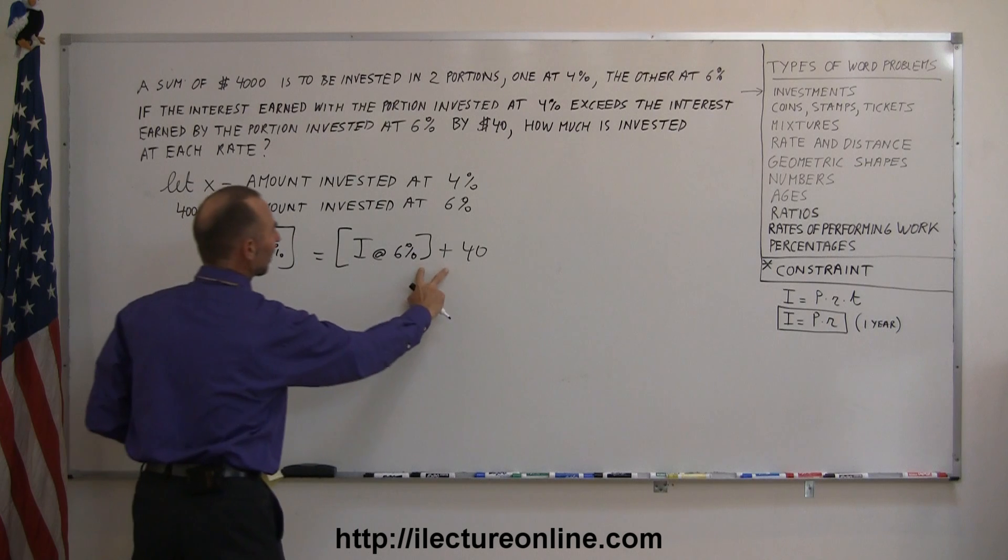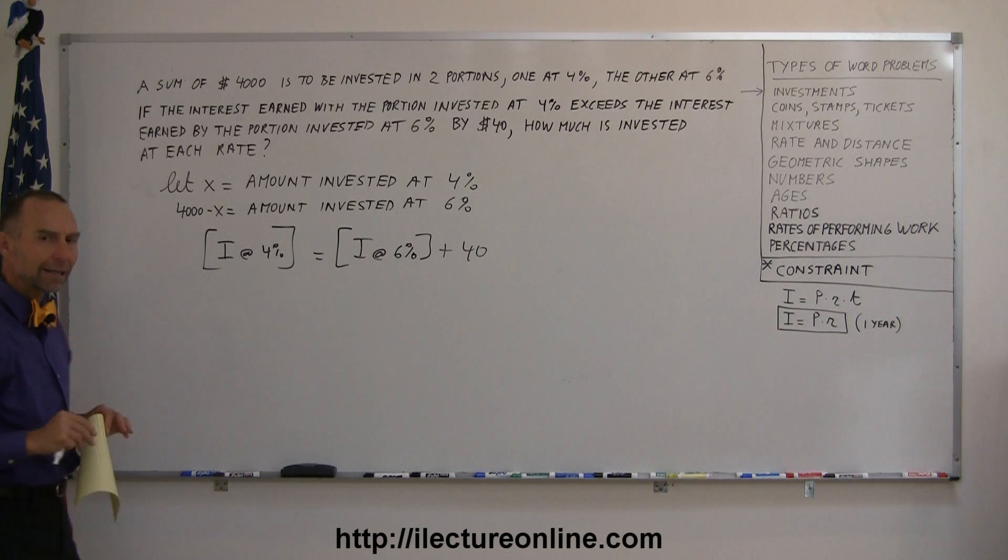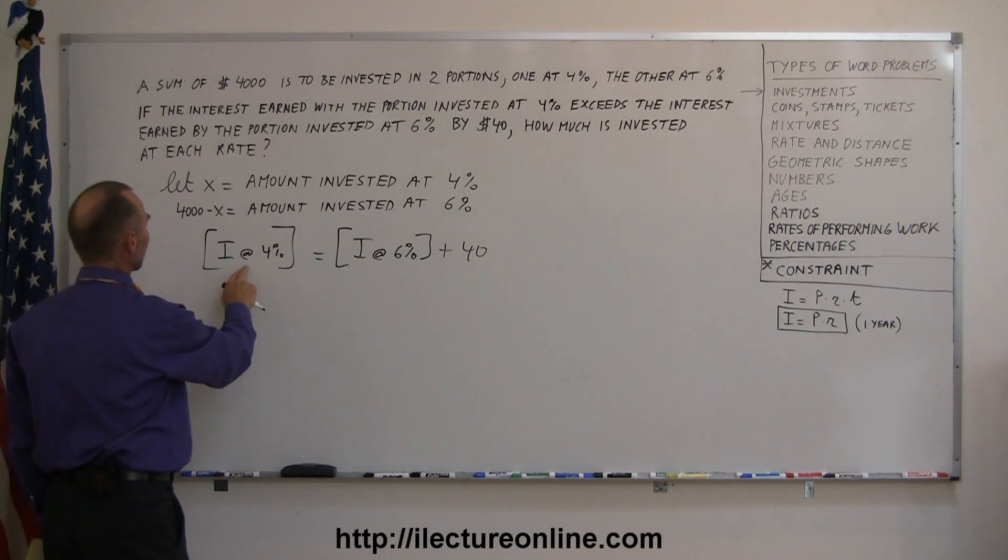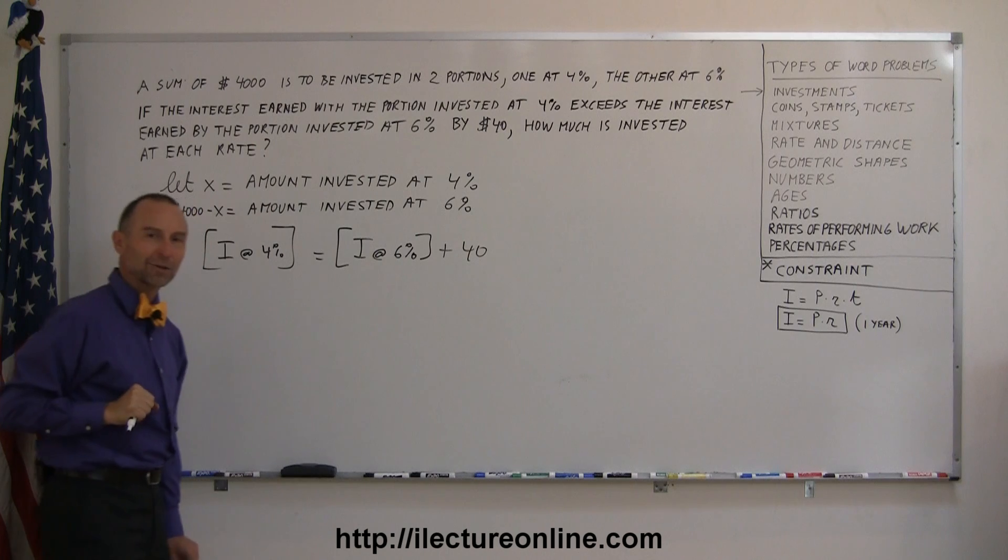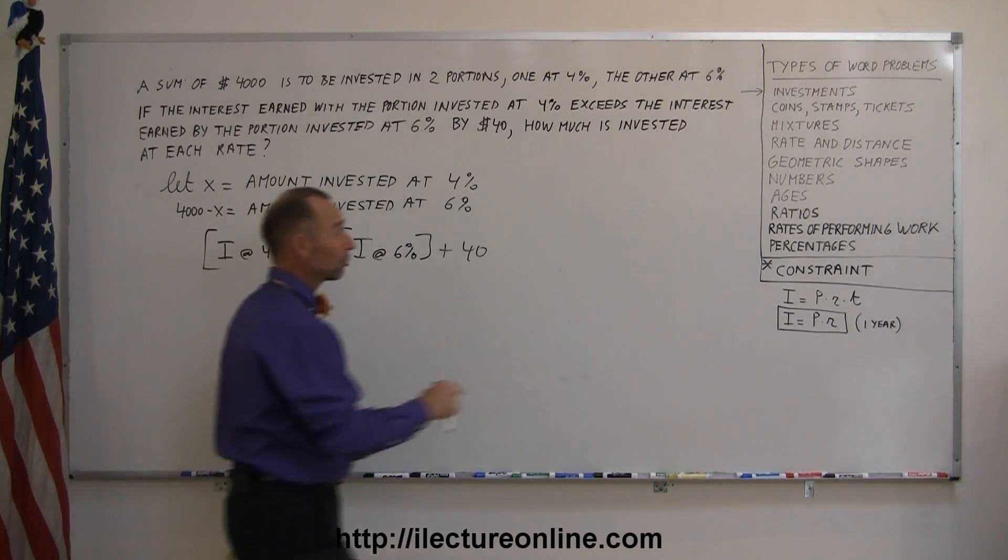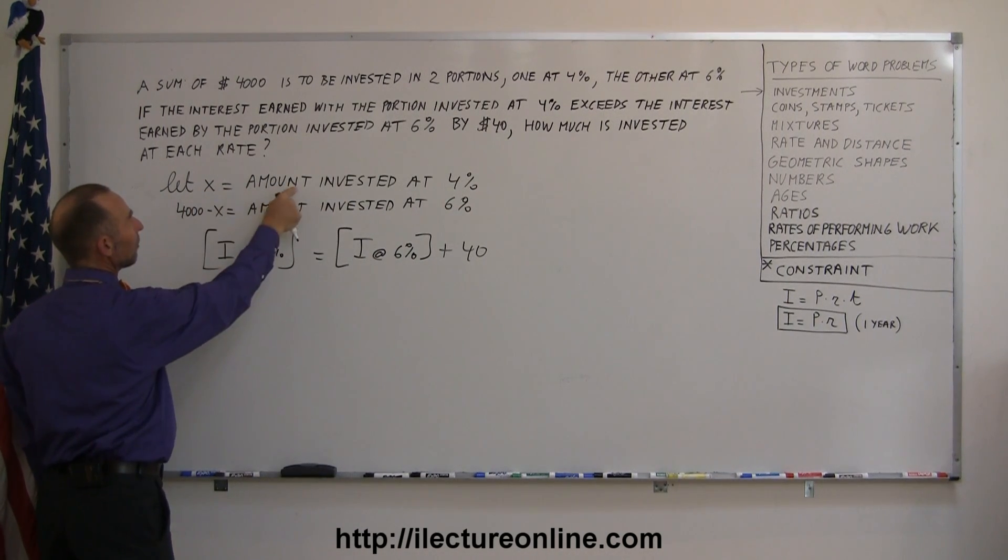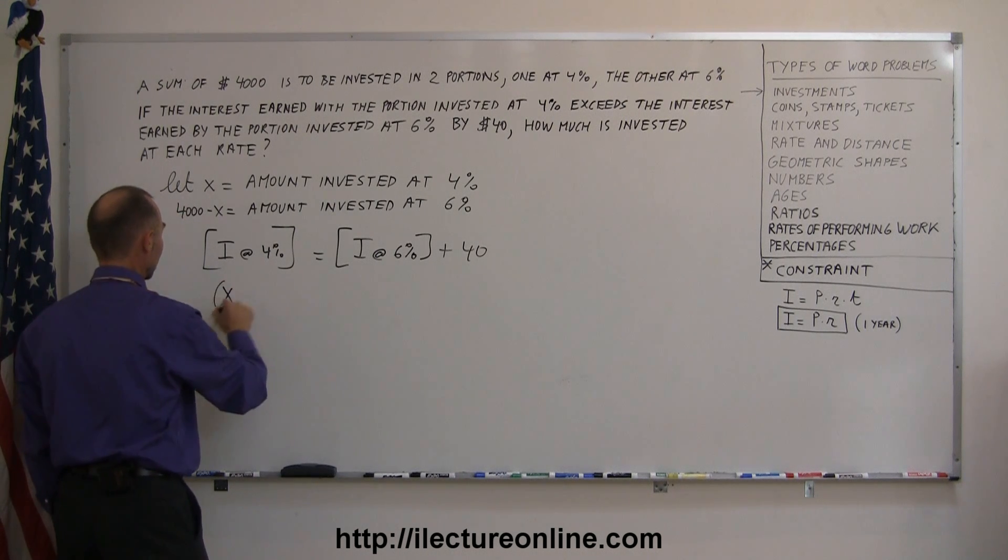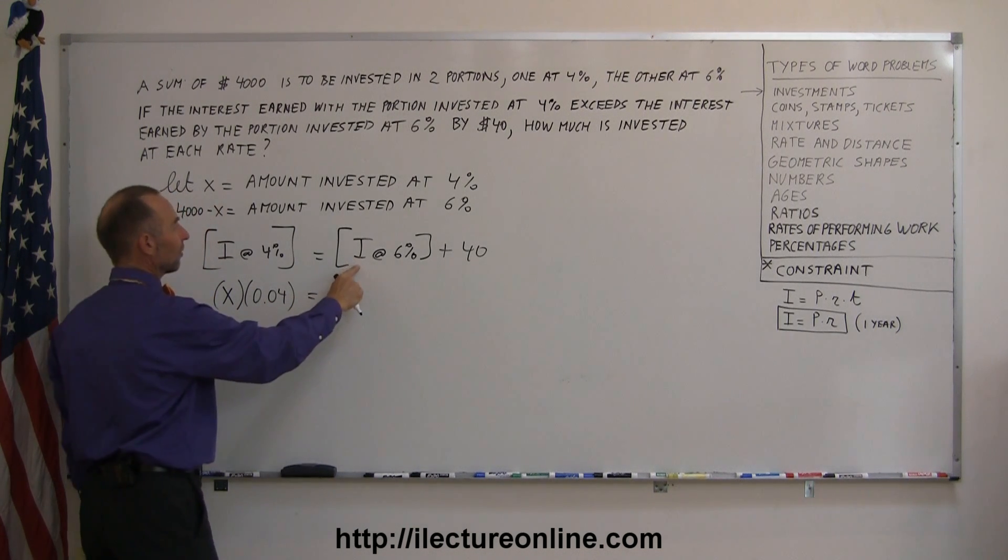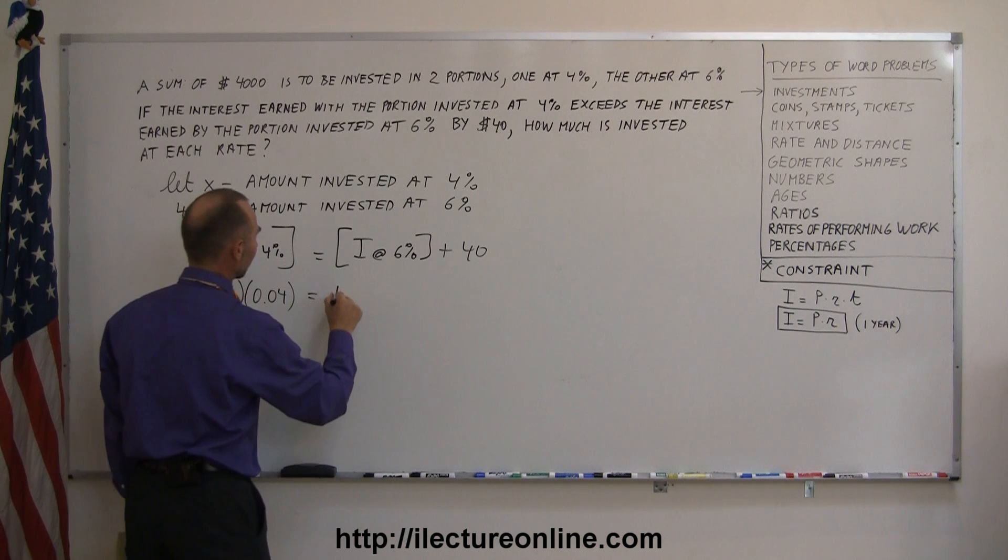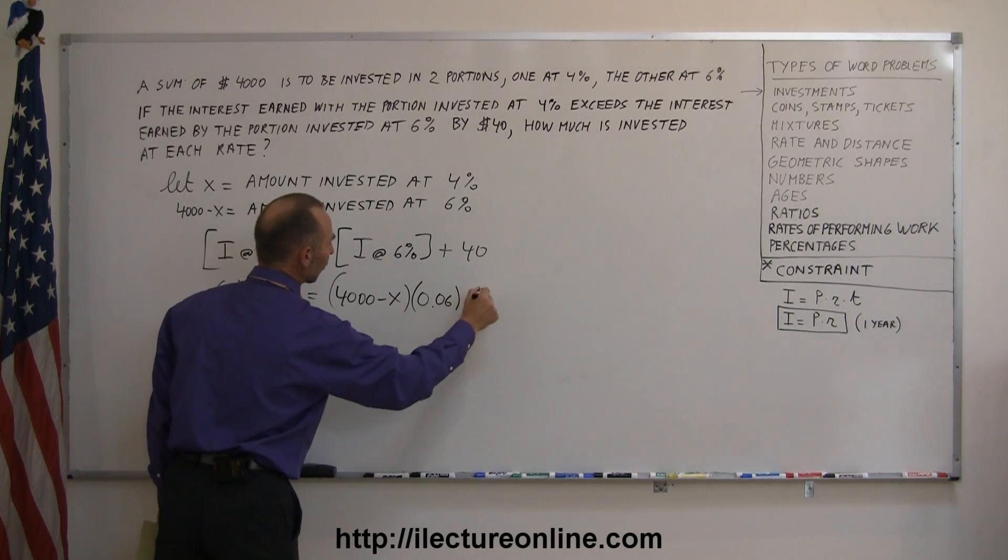Here you can see that the interest earned at 4% is $40 more than the interest earned at 6%. So you have to put it into an equation, and notice that this is kind of reversed from what we wrote in the English language. That's kind of the way we write it in mathematics. The interest earned at 4% is equal to $40 more than the interest earned at 6%. We're ready to go. The interest earned is equal to the principal times the rate, so the interest earned at 4% is going to be the amount invested at 4% times the rate, so X times 0.04 equals the amount invested at 6%, so it's 4,000 minus X times 6%, which is 0.06 plus 40.